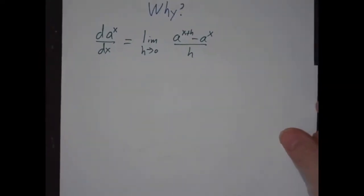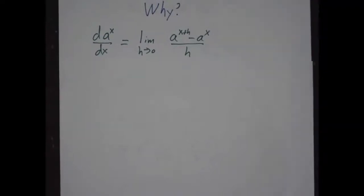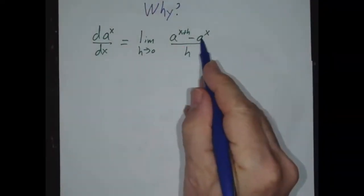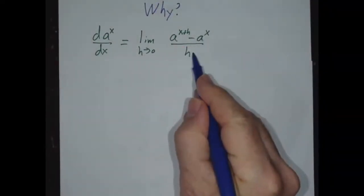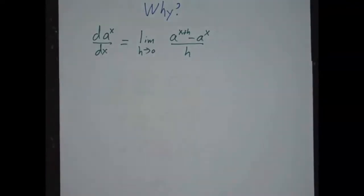So let's see why that is. If we want to take the derivative of a to the x, well, like any other function, we have to take f of x plus h minus f of x, divide by h, and take a limit as h goes to 0.